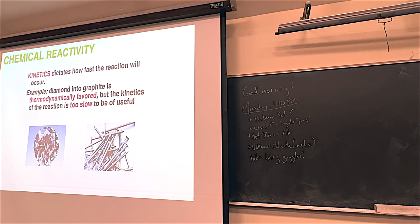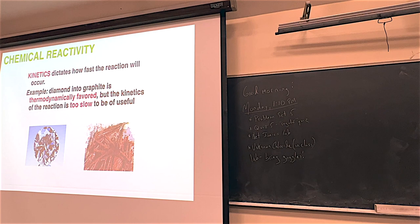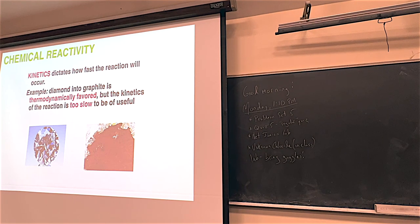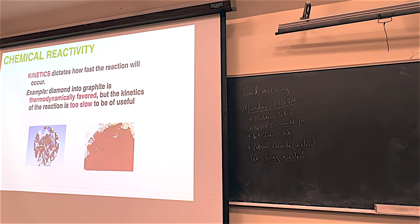Some reactions take more time than others. Iron nails react with oxygen slowly, producing rust over months. If any of you have diamond earrings or rings, diamonds are going to break down to graphite - which is pencil lead, very cheap, while diamonds are very expensive. But don't go running to the pawn shops, because kinetics makes this reaction so slow.